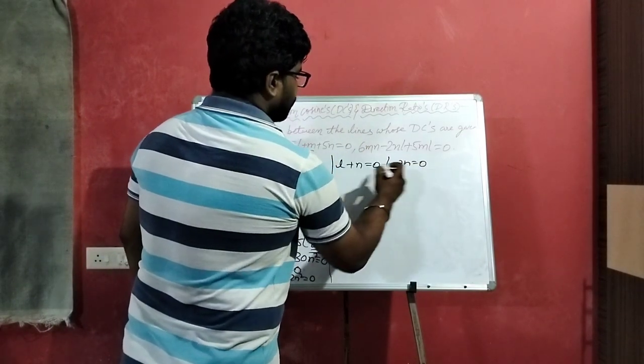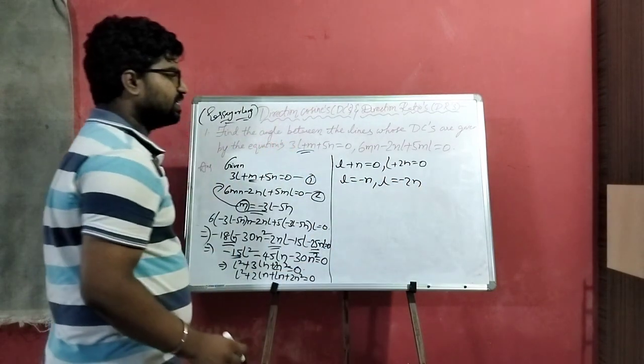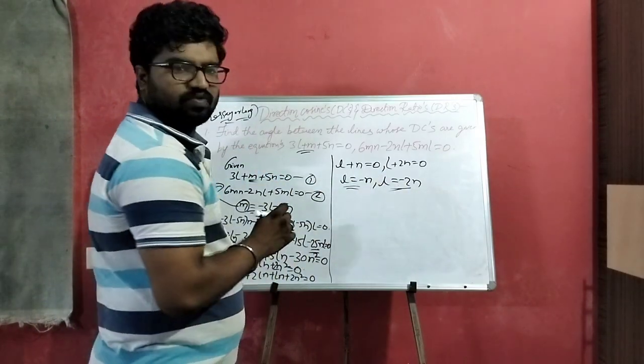If we solve further, L plus N equal to 0 and L plus 2N equal to 0. So L equal to minus N and L is equal to minus 2N. So this is case 1 and case 2.